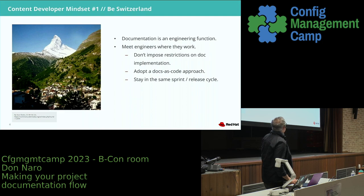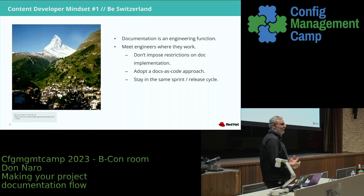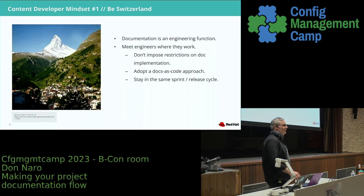Without being Switzerland and meeting your engineering team where they are, with their tools and their processes, everything else I'm going to talk about just doesn't matter and you're going to be in some silo creating content that is going to suck. Docs as code means docs live in the same source repository as the thing you're documenting. And staying in the same sprint and release cycle means being part of the engineering team — taking part in sprint reviews, sprint planning, the whole life cycle. There's room in there for content developers.